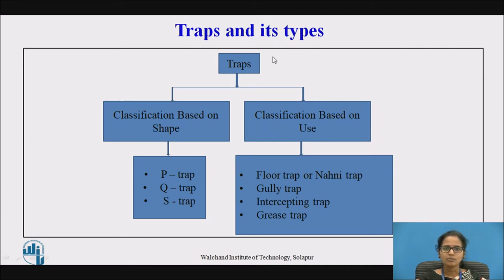Traps are classified based on shape and based on use. According to shape, they are classified as the P trap, the Q trap, and the S trap. According to use, the classification is: floor trap (also called the nahani trap), the gully trap, the intercepting trap, and the grease trap.